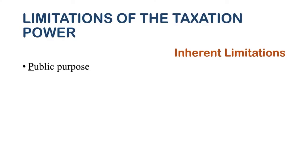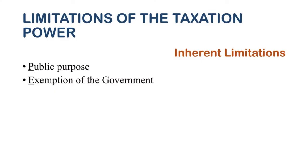The first inherent limitation is public purpose: the funds generated from taxation power should be for public purpose only. No funds should be appropriated or allocated for personal or private purposes. The second is exemption of the government: the government itself is exempt from tax. It would be illogical for the government to collect taxes from itself.